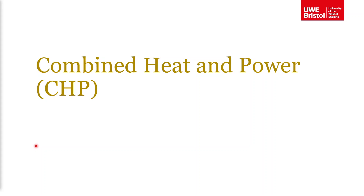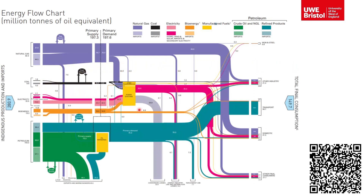I'm going to start with this energy flow chart for power generation and power usage in the UK. On the left hand side you can see all the primary forms of energy: natural gas, coal, electricity, bioenergy, petroleum, and so on. The writing on this slide might be a bit small, so if you click on the QR code you'll be able to go to the UK website and get the latest data.